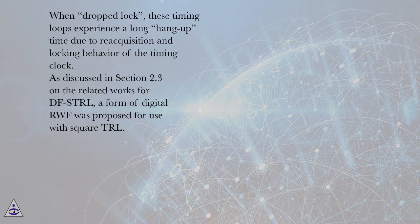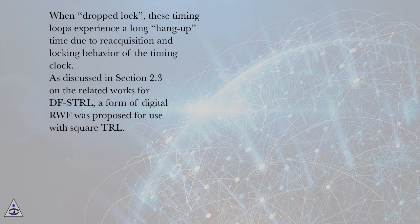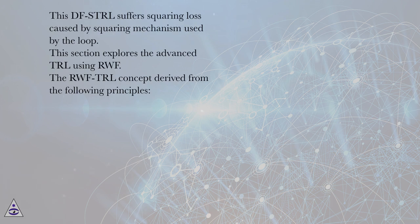As discussed in section 2.3 on the related works for DFS TRL, a form of digital RWF was proposed for use with square TRL. This DFS TRL suffers squaring loss caused by the squaring mechanism used by the loop.